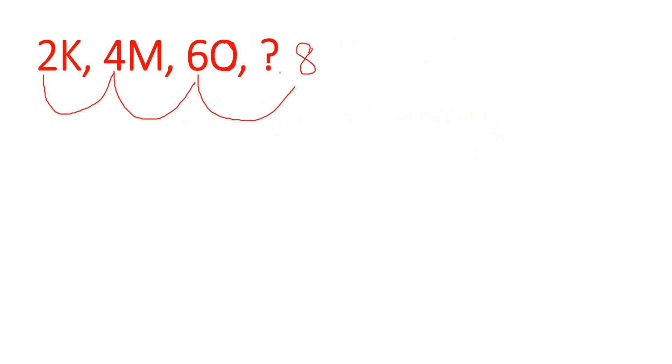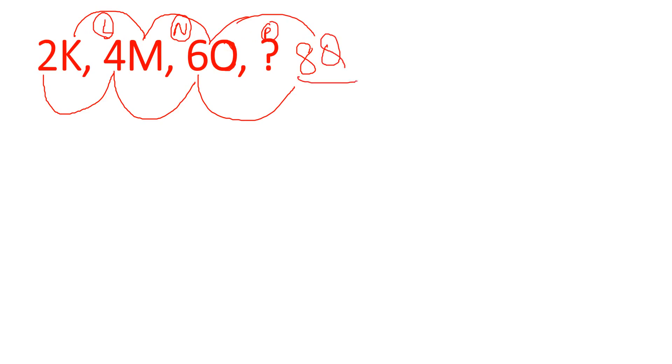Next question: 2K4M6O — find what comes next. Clearly observe: 2, 4, 6 are the numbers increasing by 2. Then looking at the letters: K, M, O — between K and M, L is missing; between M and O, N is missing. So after O, P is skipped and we write Q. The number follows the pattern — next would be 8. So the answer is 8Q.